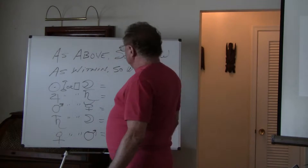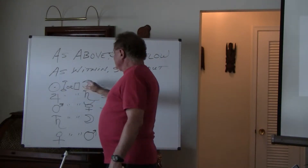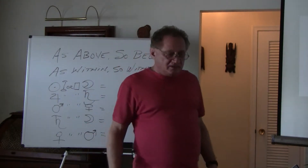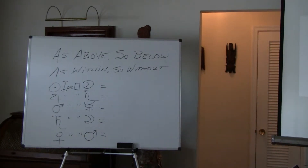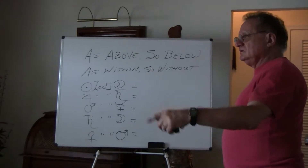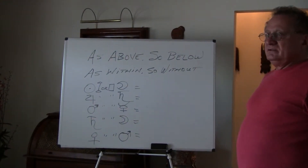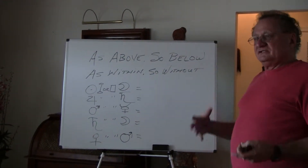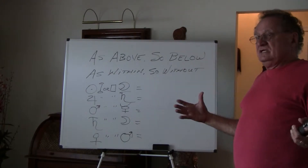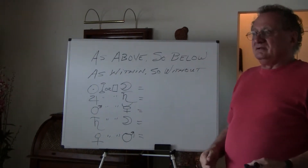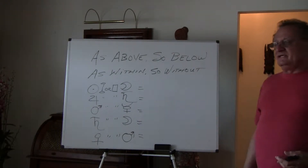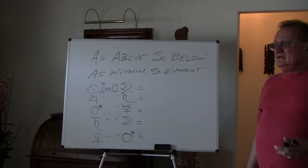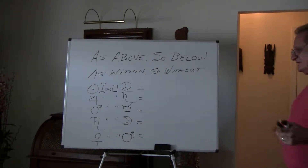So if you did a chart and found Sun opposition or square the Moon, what would you interpret that as? Conflict — always conflict. You're dealing with aspects of stress or conflict. It's the conflict between the conscious and the subconscious mind. The Moon rules the subconscious; the Sun is the conscious will.